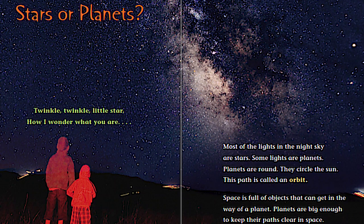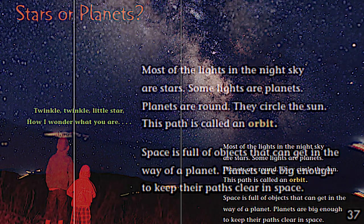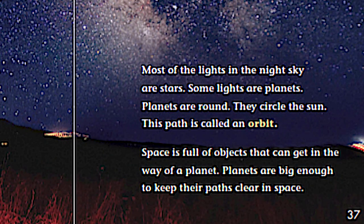Take a look at the title, Stars or Planets. Twinkle, twinkle, little star, how I wonder what you are. Do you know the rest to that? Most of the lights in the night sky are stars. Some lights are planets. Planets are round. They circle the sun. This path is called an orbit.